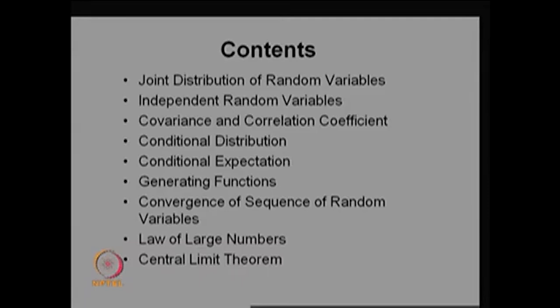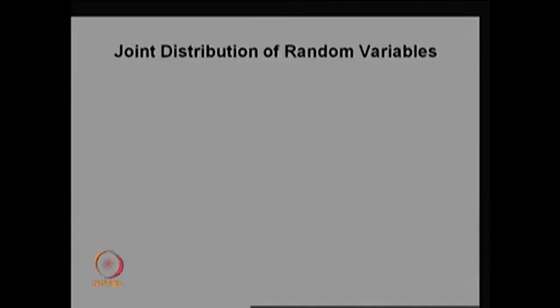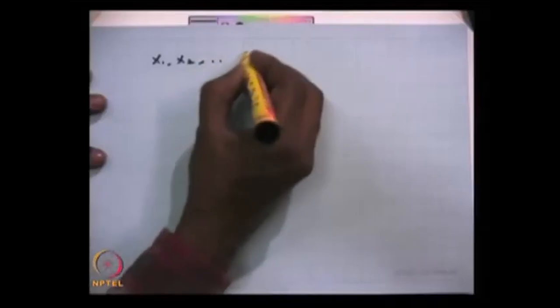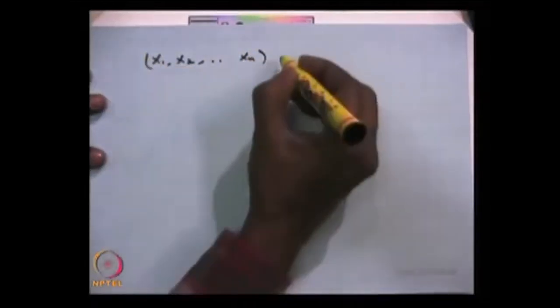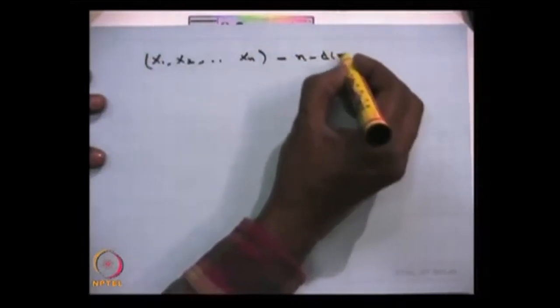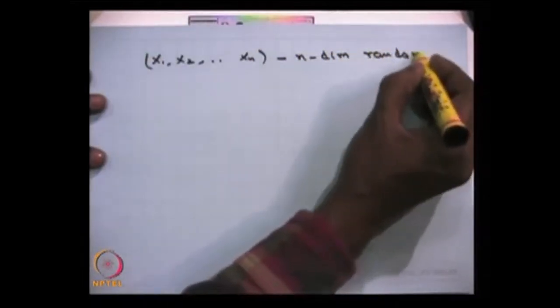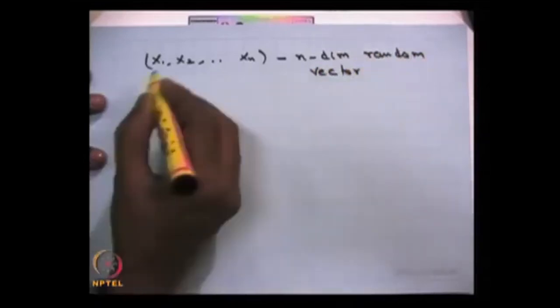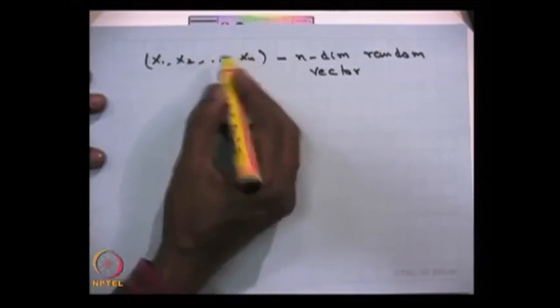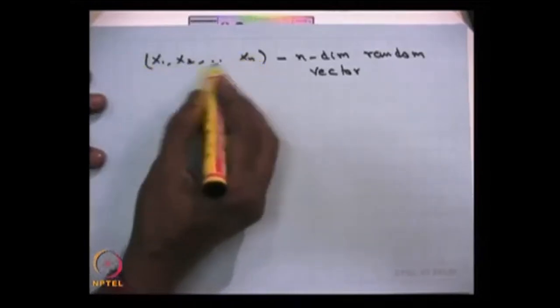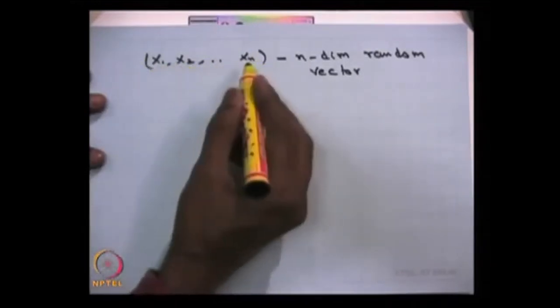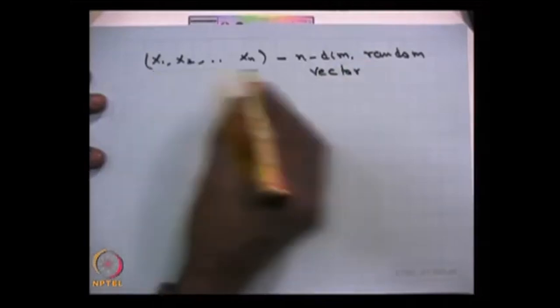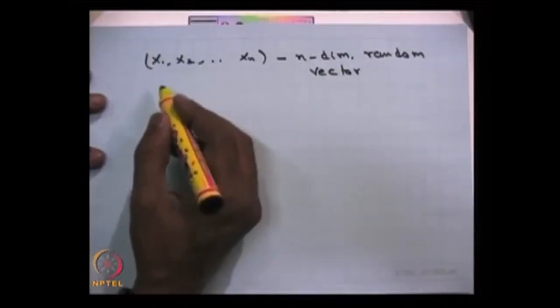Let me start with the joint distribution of random variables. Suppose you have random variables x1, x2, ..., xn — we say this is an n-dimensional random vector, where each random variable x1, x2, ..., xn can be either discrete or continuous. When taken together in vector form, it is called an n-dimensional random vector, and once in that vector form we can define the joint distribution.